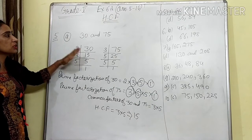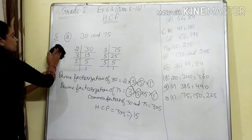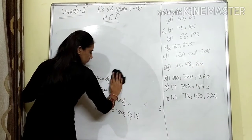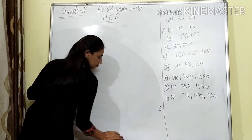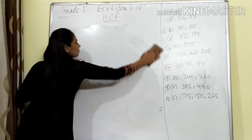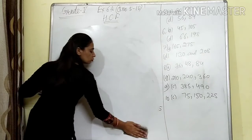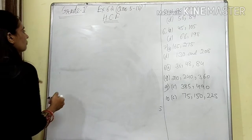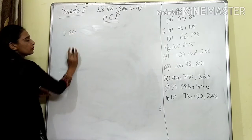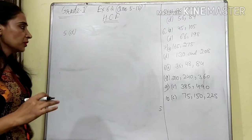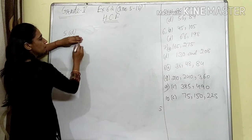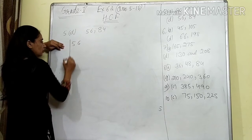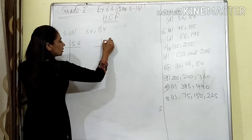Now we will start part B. In all these sums, you have to do the same steps — only the digits and factors will change, but all factors will be prime factors. Question number 5, D part: 56 and 84 are given. So we have to do the prime factorization. We will take 56 and 84 separately.